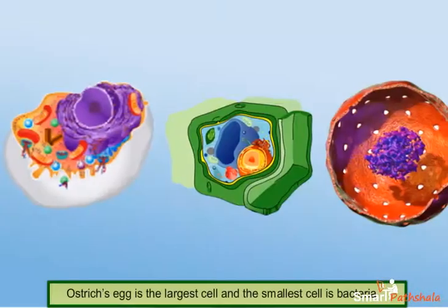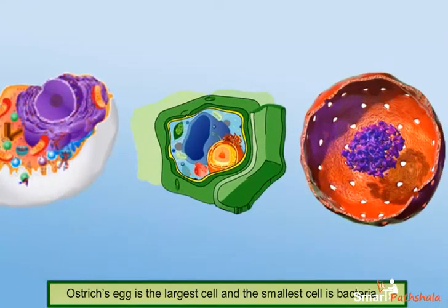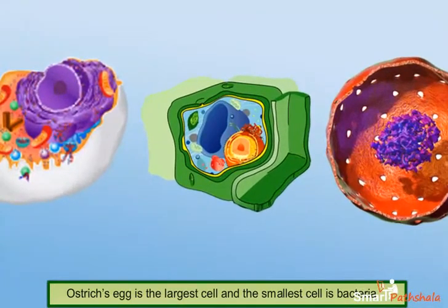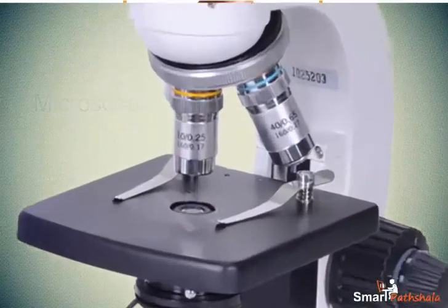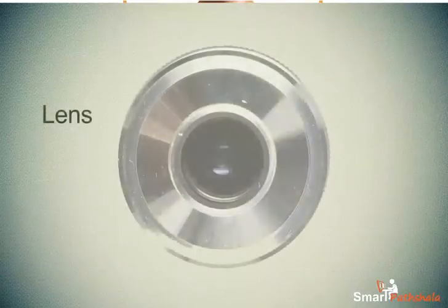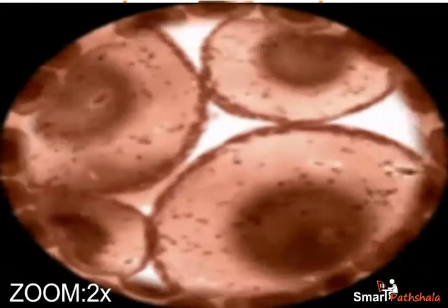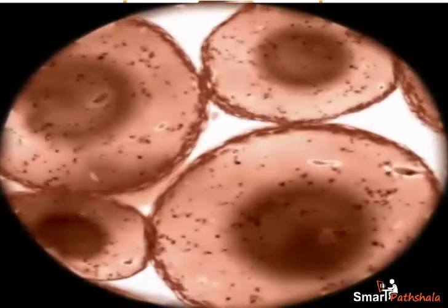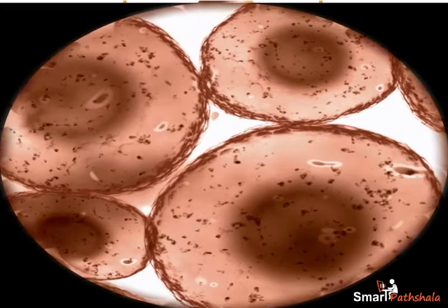Cells vary in their size. Some cells may be big and some cells may be small. However, most cells are microscopic in size and are not visible to the naked eye — they need to be enlarged or magnified by a microscope. The ostrich egg is the largest cell, and the smallest cell is bacteria, with a size of 0.1 to 0.5 micrometers.